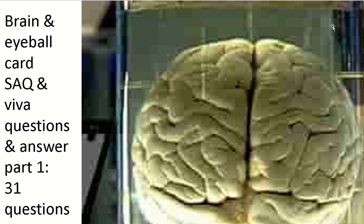Question 9: Name the basal nuclei of the cerebrum. Answer: The corpus striatum, comprising the caudate nucleus and lentiform nucleus (which includes the globus pallidus and putamen), and the amygdaloid body.